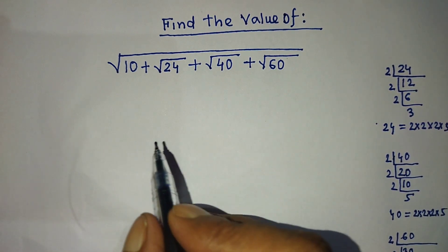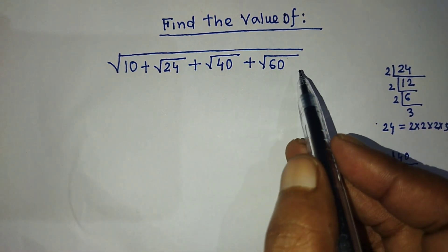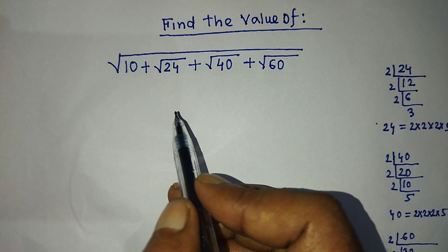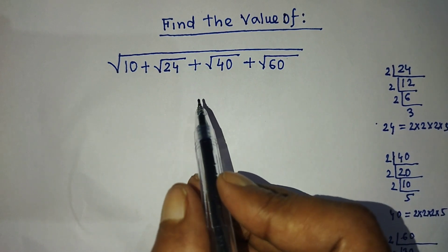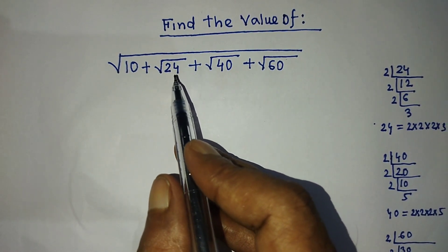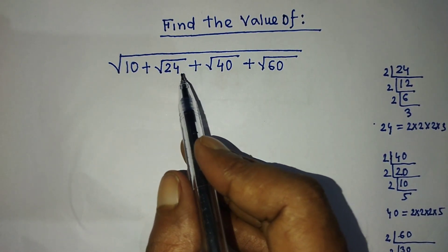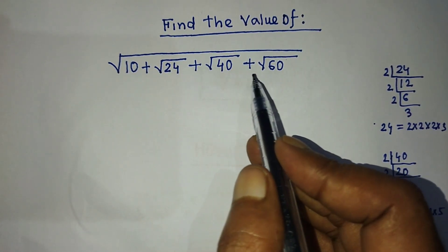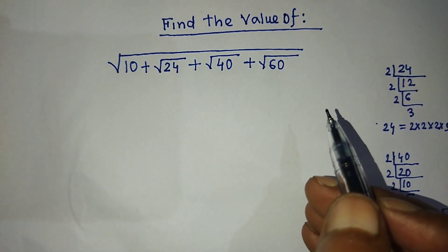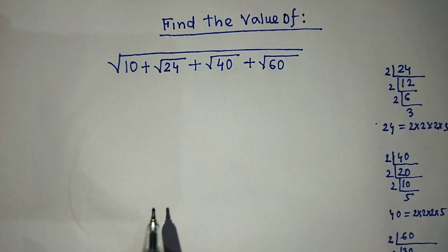To find the square root of this algebraic expression, first of all we have to find the square root of 24, 40, and 60 by the prime factorization method.